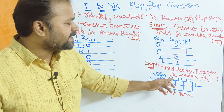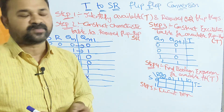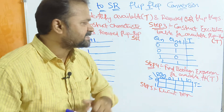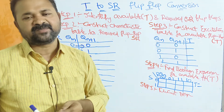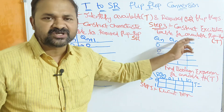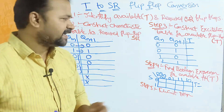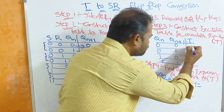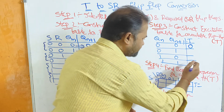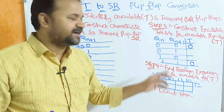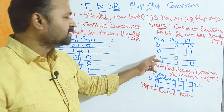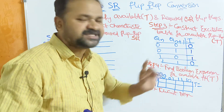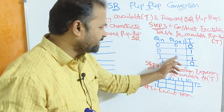Step 3 and Step 4 are based upon the available flip-flop. Step 3 is to construct the excitation table for the available flip-flop — which is the T flip-flop. Here the inputs are Qn and Qn+1, and the output is T. With 2 inputs we have 2² = 4 combinations. The excitation table is simple: if the inputs are the same, the output is 0. So 0→0 gives T=0 and 1→1 also gives T=0. If the inputs are different, the output is 1: 0→1 gives T=1, and 1→0 also gives T=1.